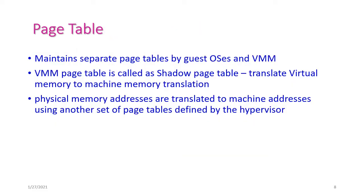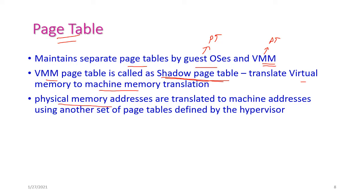Regarding page tables in memory virtualization: the guest OS maintains a separate page table, and the VMM also maintains a separate page table called the shadow page table. The shadow page table translates virtual memory to machine memory. Physical memory addresses are translated to machine addresses using another set of page tables defined by the hypervisor.